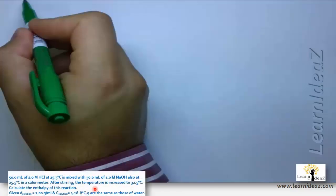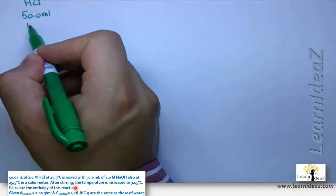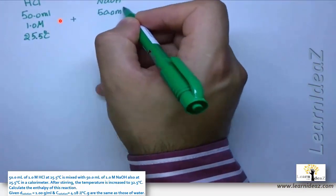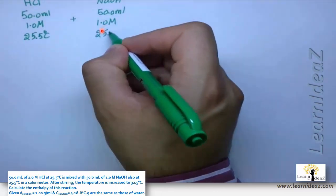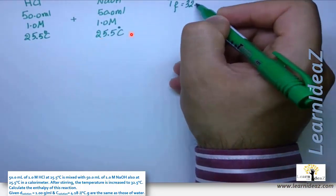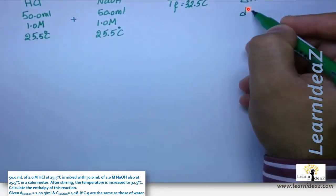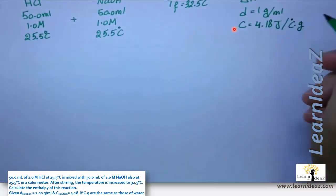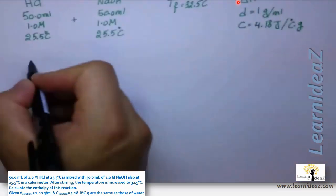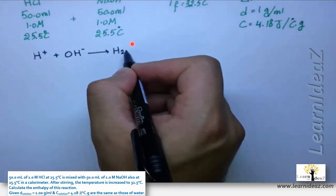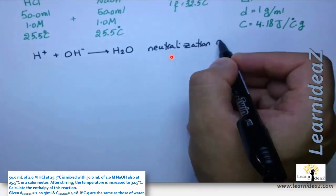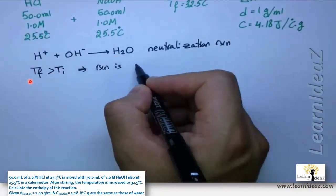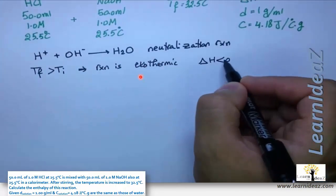The neutralization reaction is: H⁺ + OH⁻ → H₂O. Since the final temperature (32.5°C) is higher than the initial (25.5°C), the reaction is exothermic, so delta h is negative. We apply: delta h = −mc × delta t / n.